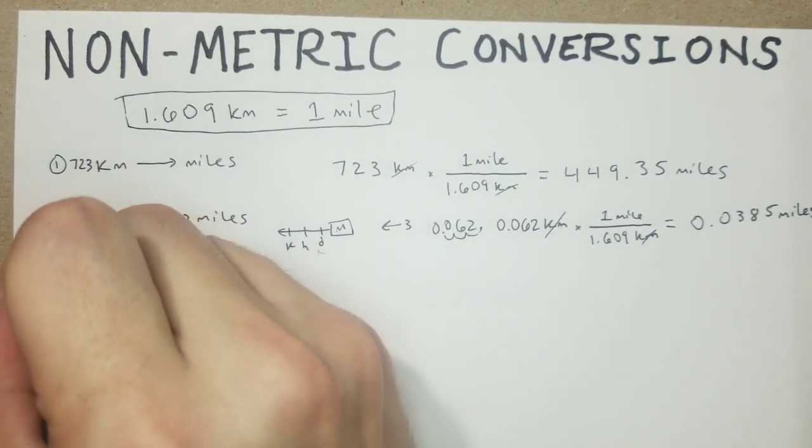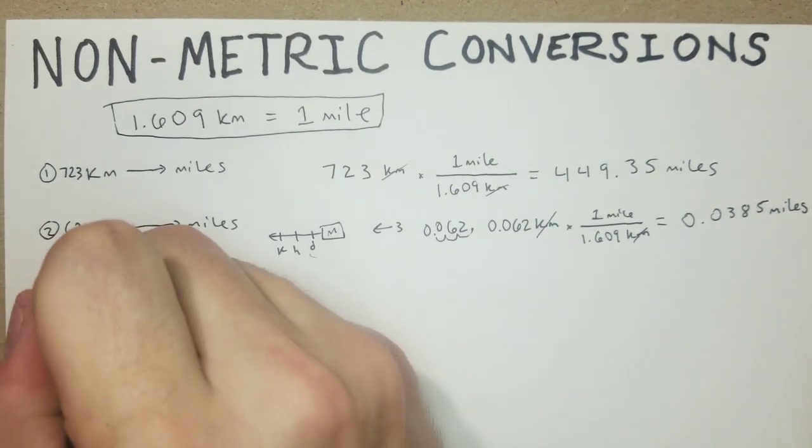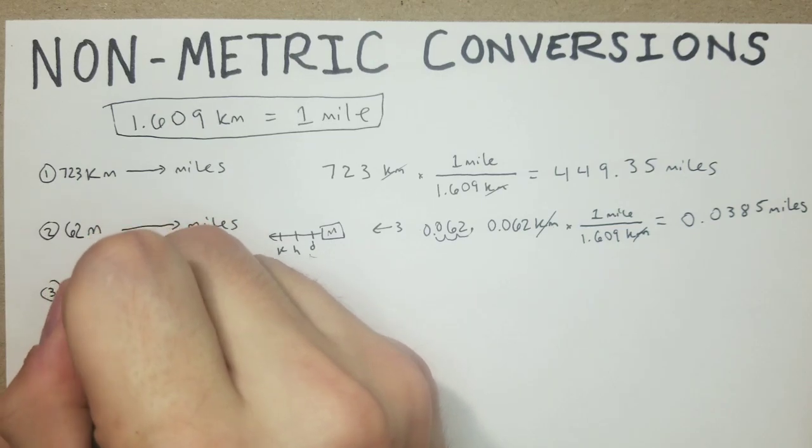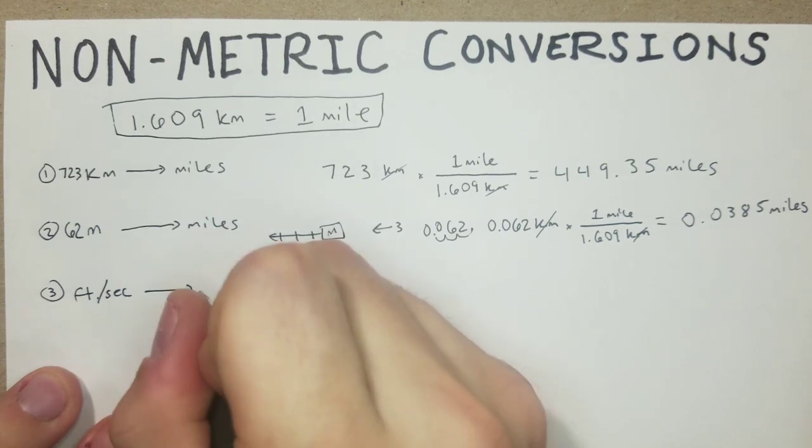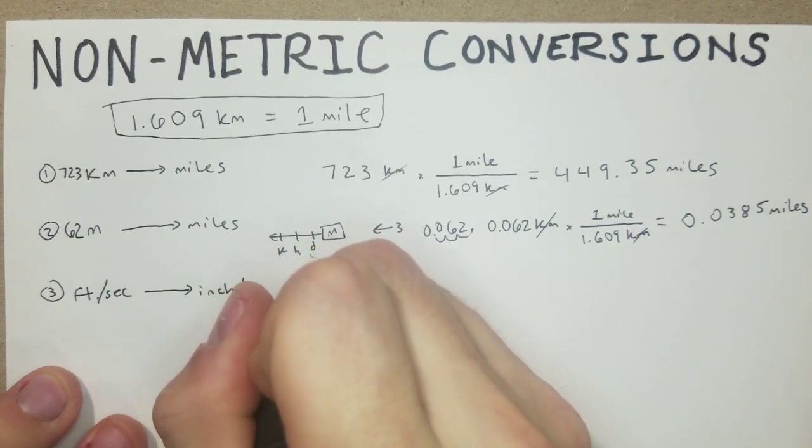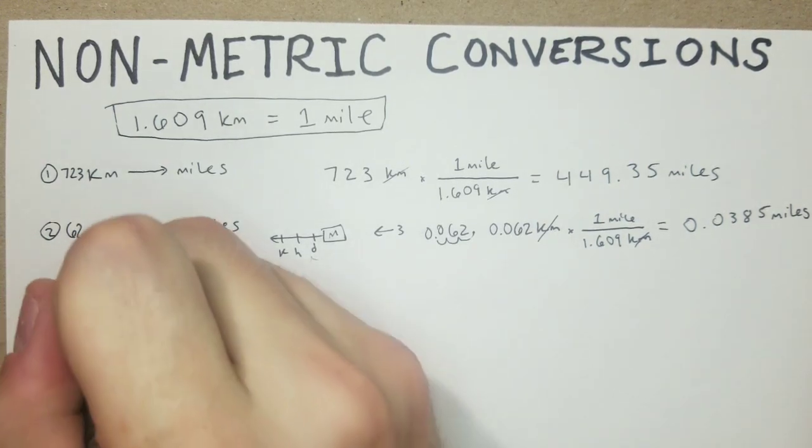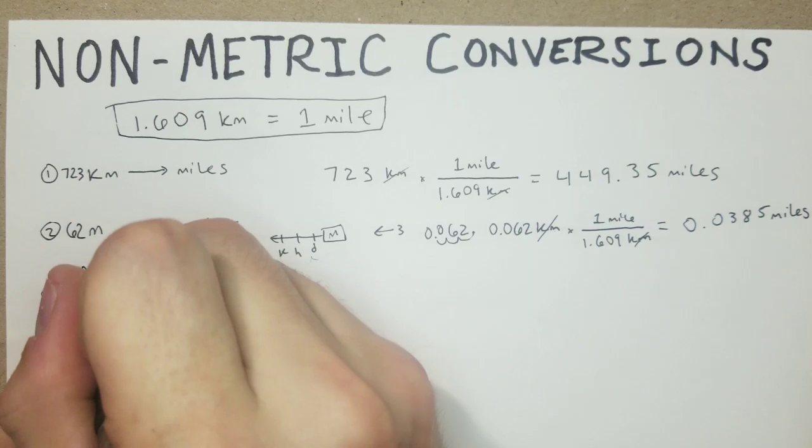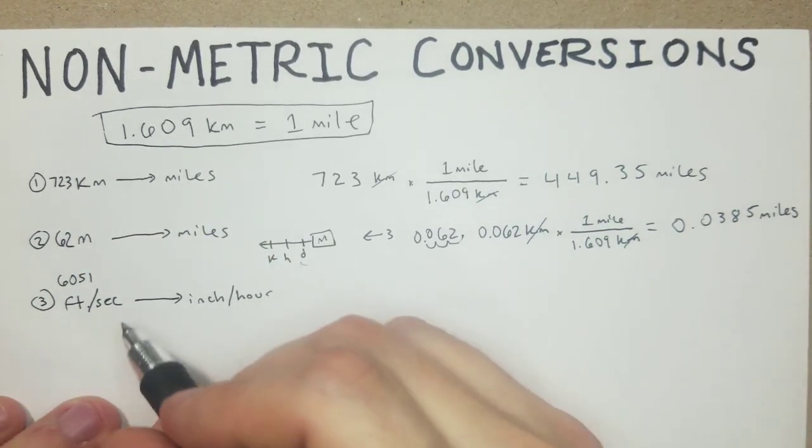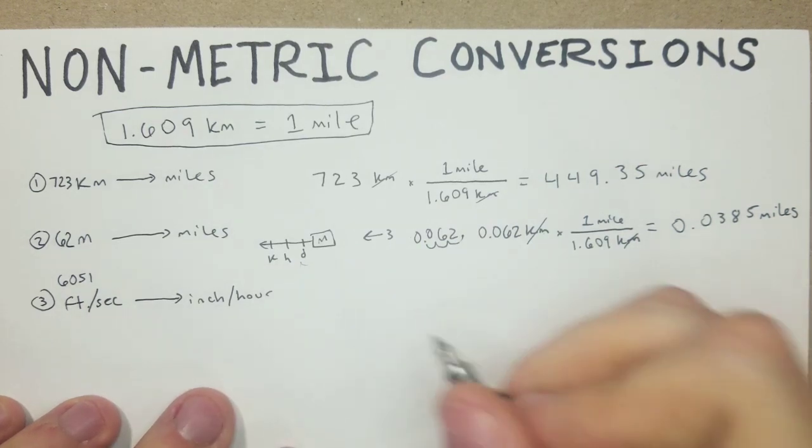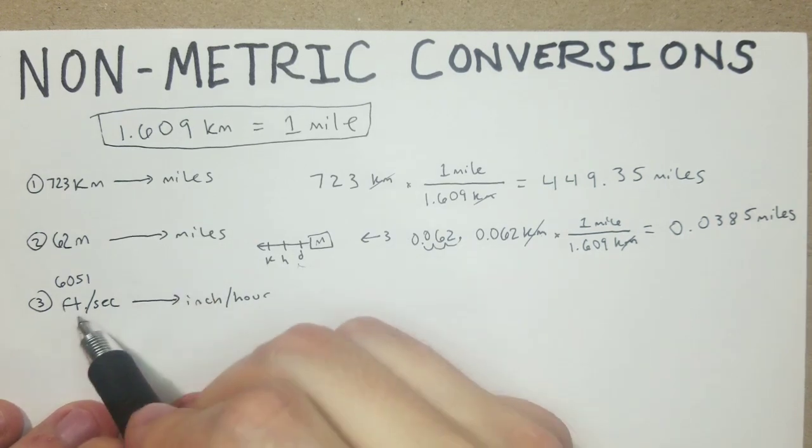Okay, now we're going to get a little bit more complicated. We're going to go from feet per second to inches per hour. Let's say we have 6051 feet per second and we're trying to get to inches per hour. Probably should have started with something a little bit smaller, but we'll see. In this case, it sounds kind of confusing right off the bat, but we know a few things here.